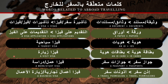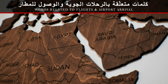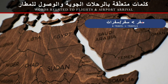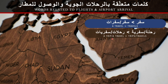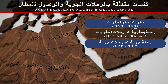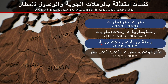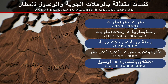Now the second group of words related to flights and airport arrival. A travel: سفر. Plural: سفر or سفرات. A trip or travel: رحلة سفرية. Plural: رحلات or سفريات. A flight: رحلة جوية. Plural: رحلات جوية. A ticket: تذكرة, or the full form تذكرة سفر — a trip ticket. Plural: تذاكر or تذاكر سفر.